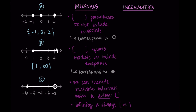Then we can repeat this for example c. I see that negative two has an open circle on it, so that tells me I'm going to use a negative two with a parenthesis — we're going all the way up to negative two but not including it. We're looking at everything less than negative two, so I put that on the left: negative infinity all the way up to negative two. Since we're using infinity, that also has a parenthesis. So we have negative infinity, comma, negative two with parentheses on both sides.